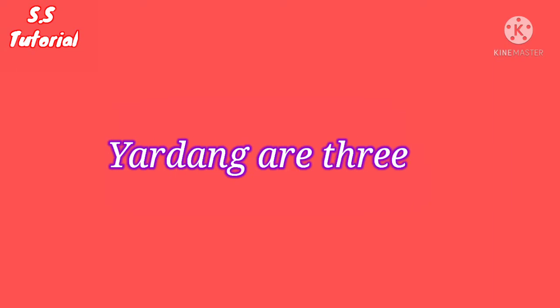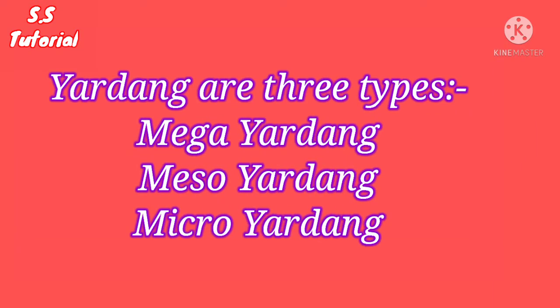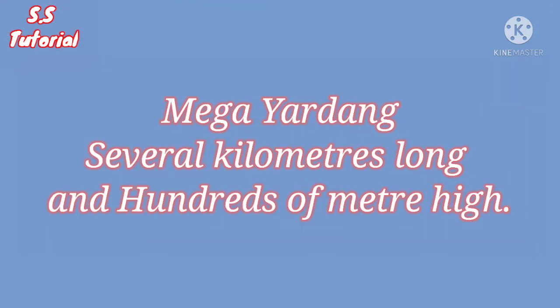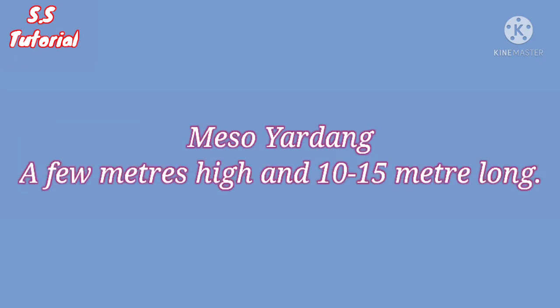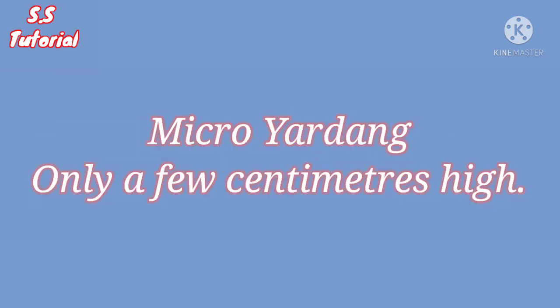Yardangs are of three types: Mega Yardang, Meso Yardang, and Micro Yardang. Mega Yardangs can be several kilometers long and hundreds of meters high. Meso Yardangs are generally a few meters high and 10 to 15 meters long. Micro Yardangs are only a few centimeters high.